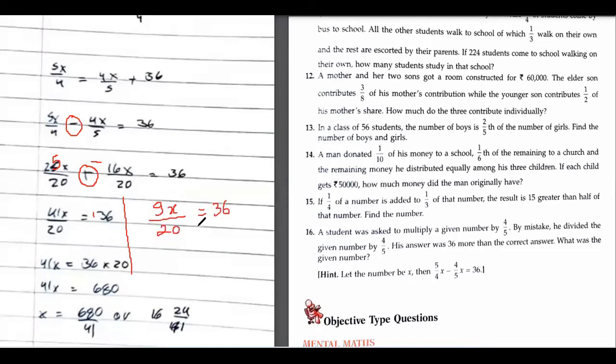36 goes to the other side—I mean 20 goes to the other side. So 36 multiplied by 20. I know 9 will go to the other side.